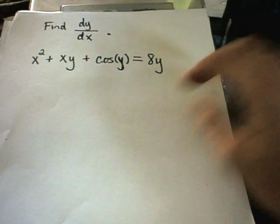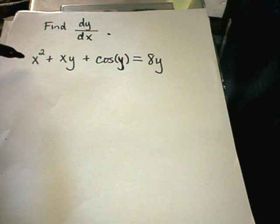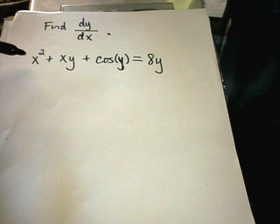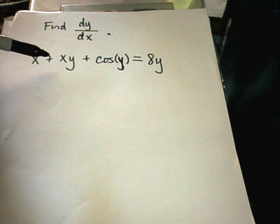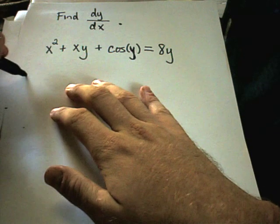So let's do a basic example here. We want to find dy/dx. Notice I do have an implicit equation. I've got some x's and y's jumbled up here. So if I take the derivative of this thing.